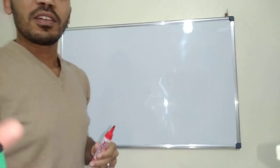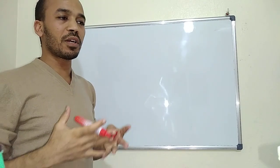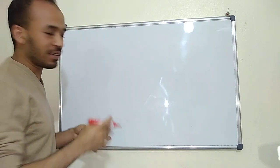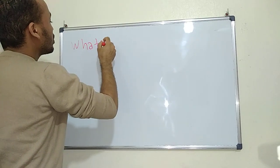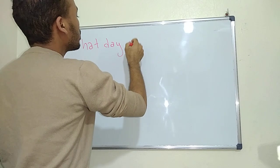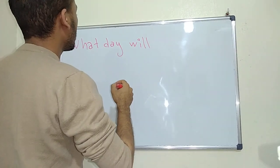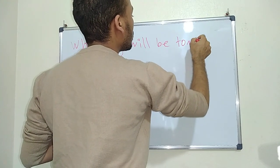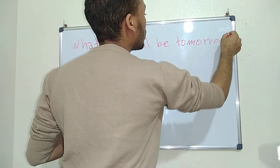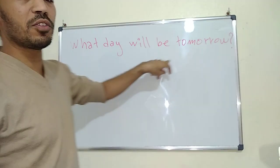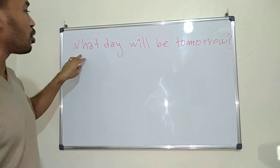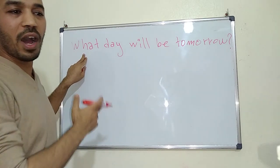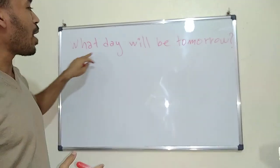Now the last one is how we form a question talking about the future. Simply it would be like this — and we put a question mark: 'What day will be tomorrow?' We form questions with 'what' — we call them W-H clauses: what, when, where, why, etc. So: 'What day will be tomorrow?'